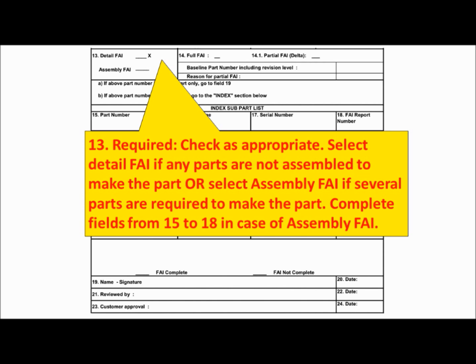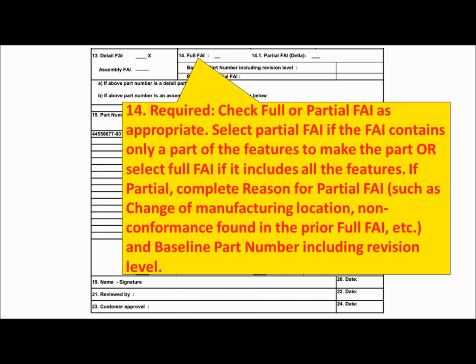Field 13 is required — please select Detail FAI if any parts are not assembled to make the part, OR select Assembly FAI if several parts are required to make the part. Complete fields 15 to 18 in case of assembly FAI. Field 14 is required — please check Full or Partial FAI as appropriate. Select Partial FAI if the FAI contains only a part of the features, or Full FAI if it includes all features. If partial, complete the reason for partial FAI, such as change of manufacturing location, non-conformance found in the prior full FAI, etc., and the baseline part number including revision level.